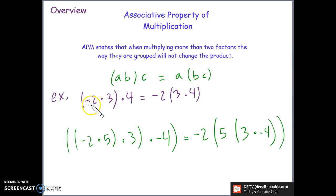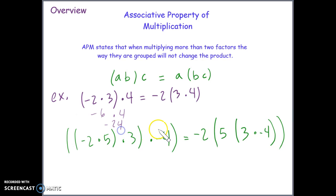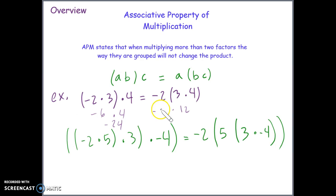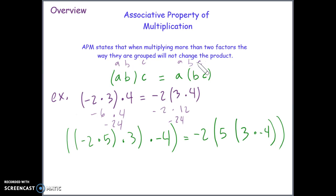When we multiply negative 2 times 3, we get negative 6, times 4 is negative 24. And here we've grouped the 3 and the 4, so they get multiplied first, giving us 12, and then we multiply by negative 2, which is negative 24. With the associative property, the location of the factors does not change — they stay in the same physical order.